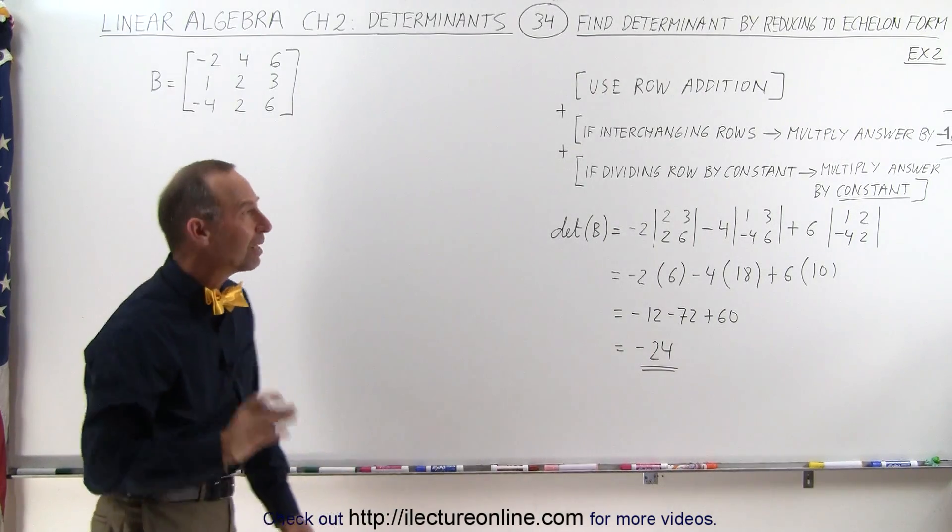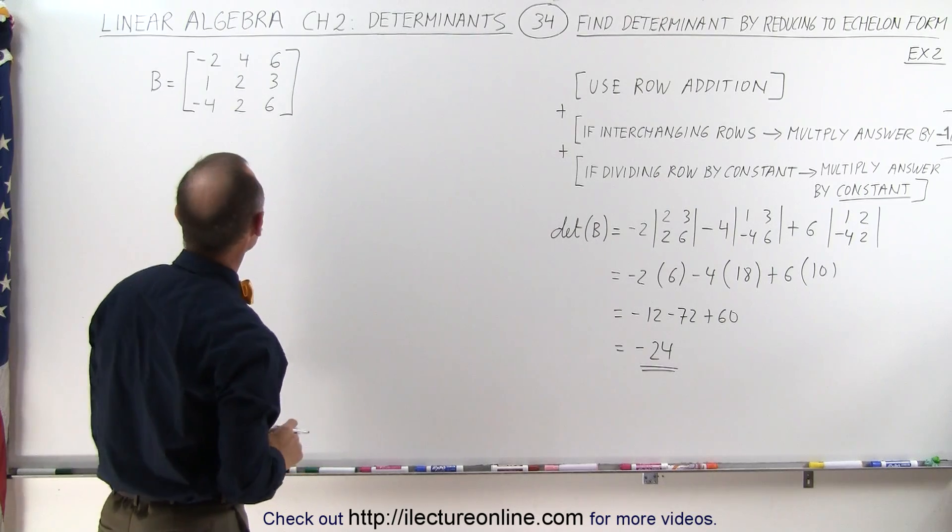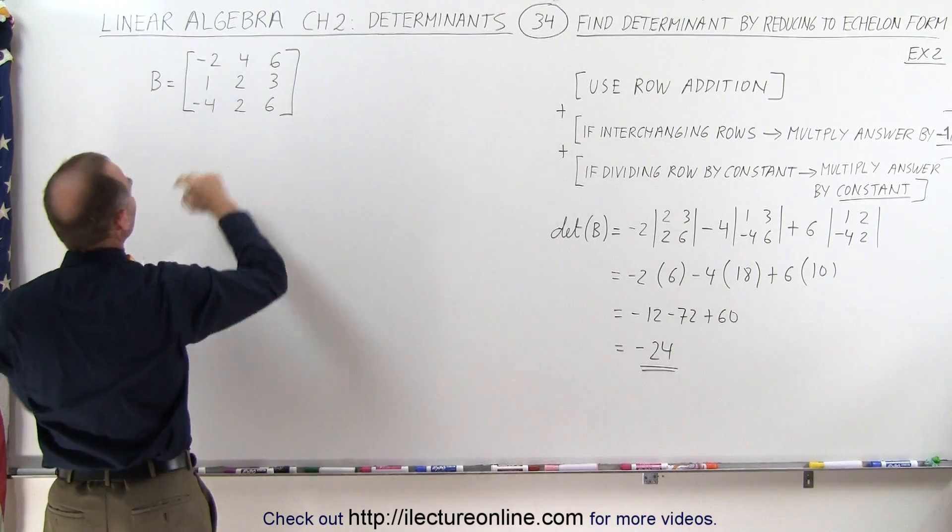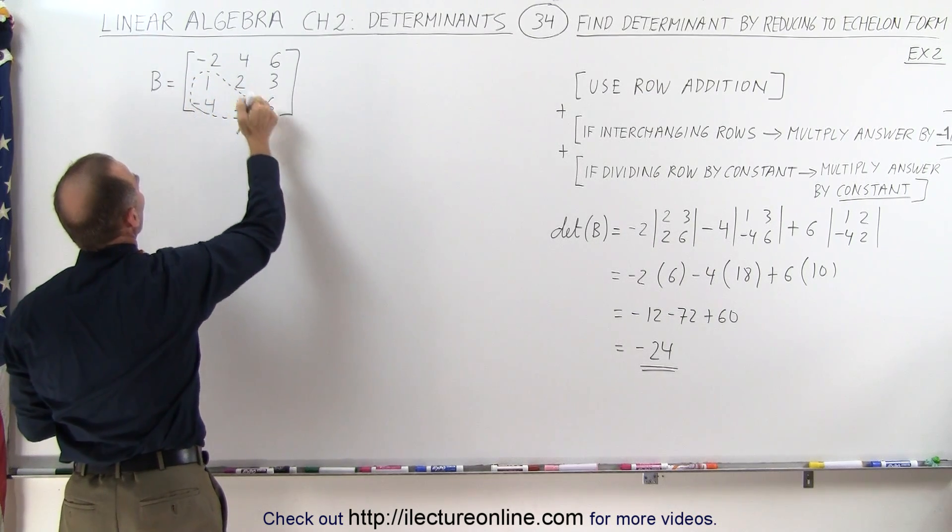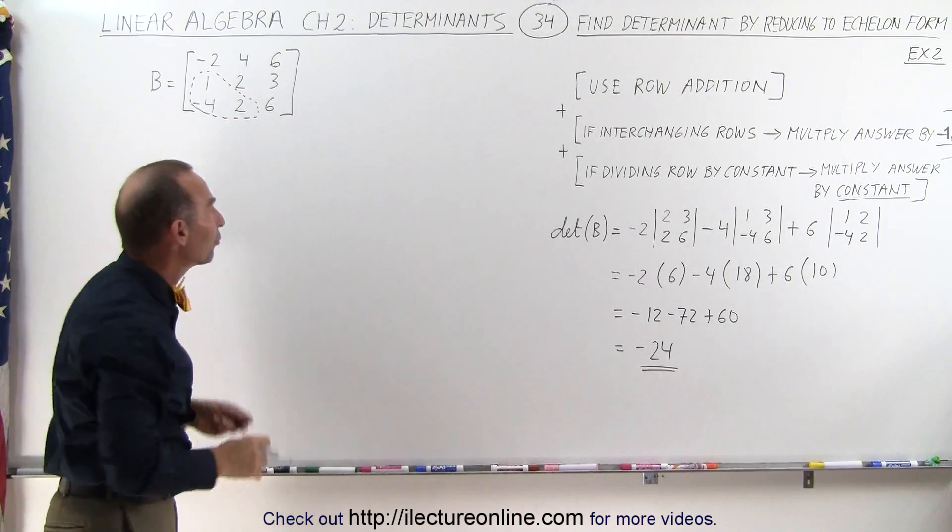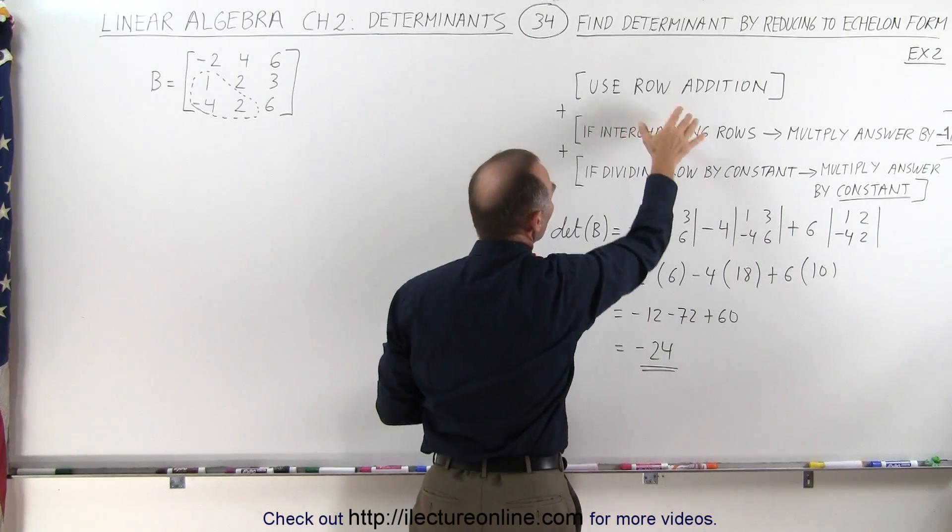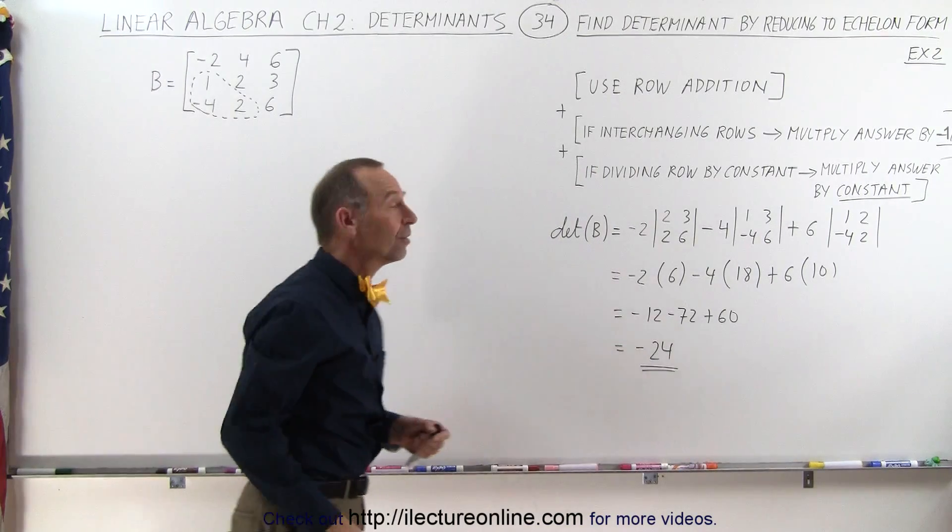Now let's see if we can find the same results when we use the reduce into echelon methodology. So here we have our original matrix. What we want to do here is take these elements right here, these three elements, and turn those into zeros. We don't care what the value of the other elements are, but the traditional methods of doing that is using row addition, interchanging rows if it helps us, and dividing or multiplying a row by a constant.